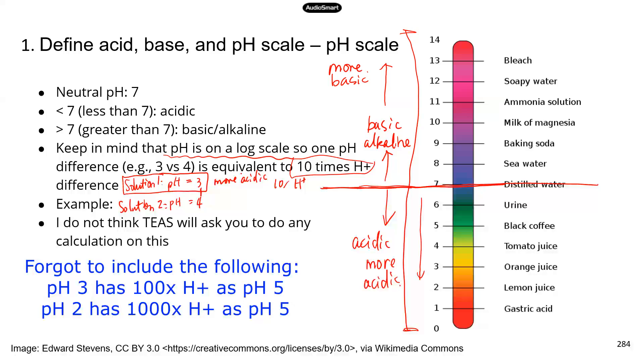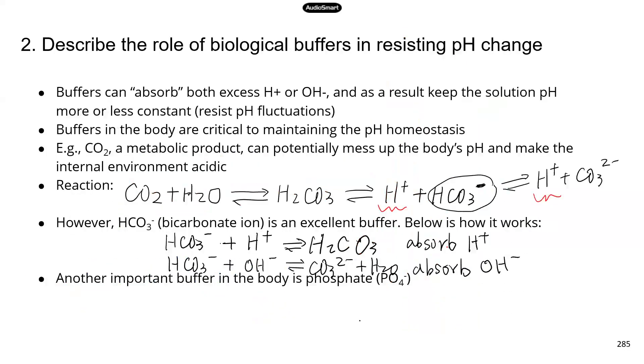I have a bullet point here. I don't think he will ask you to do any calculations, like calculate the pH of a solution. But maybe just know that the pH scale is on the log scale. So the numbers that you see here, when you convert back to the log scale, the actual hydrogen concentration is 10 times for each number difference.